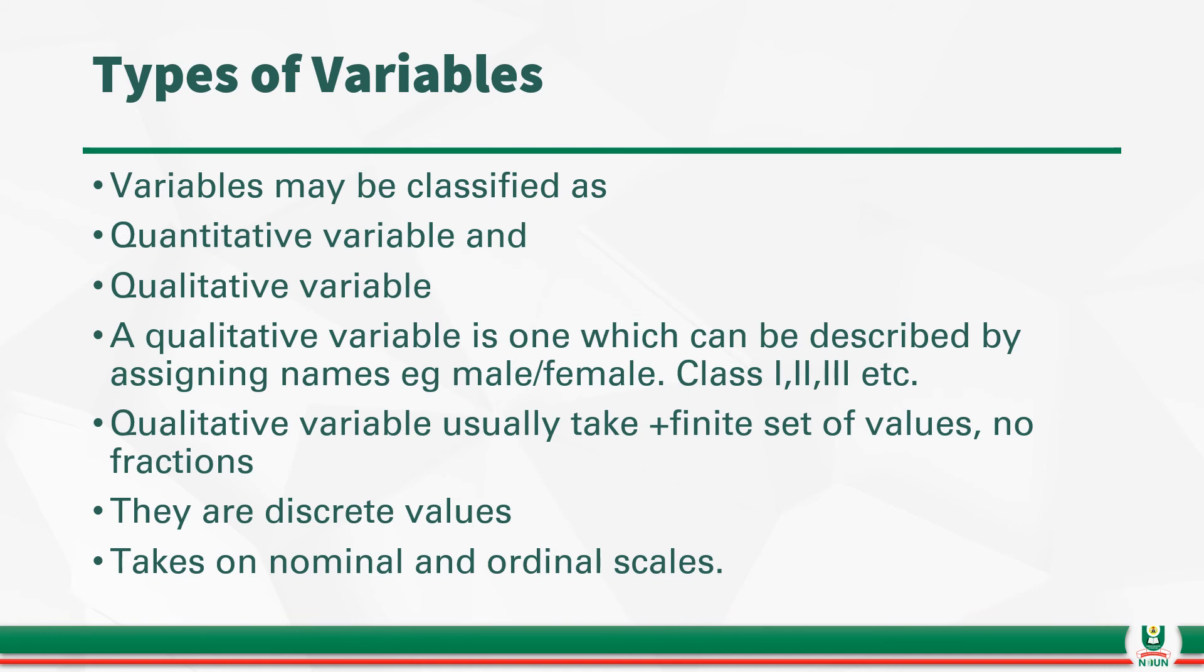But you can also use numbers as names to assign to various streams in the class. You can say they are class 1, class 2, and class 3 without necessarily attaching any particular magnitude to them. Like class 1 can be class 1, A, B, C, D. You just differentiate them. It is a variable that you are just qualifying that particular class or variable as the case may be.